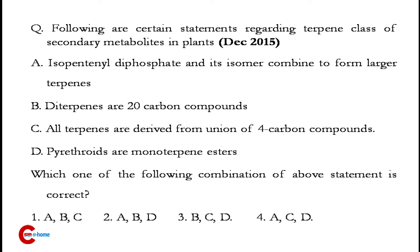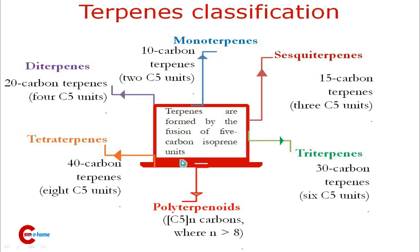Secondary metabolites have three categories: terpenes, phenolic compounds, and nitrogen-containing compounds. Terpenes are formed by fusion of five-carbon isoprene units. We can classify terpenes into monoterpenes, sesquiterpenes, diterpenes, triterpenes, tetraterpenes, and polyterpenes based on how many C5 units they contain.